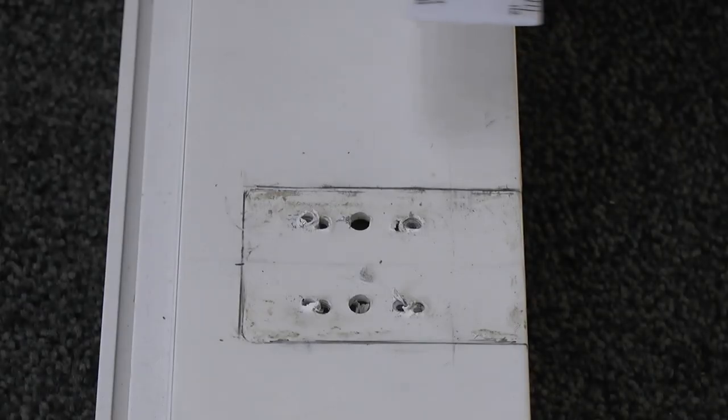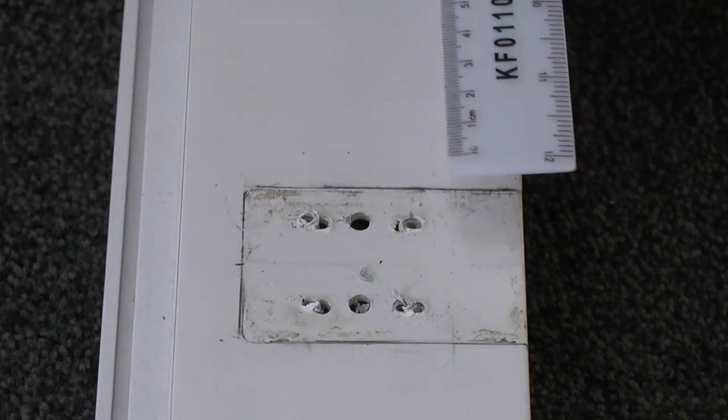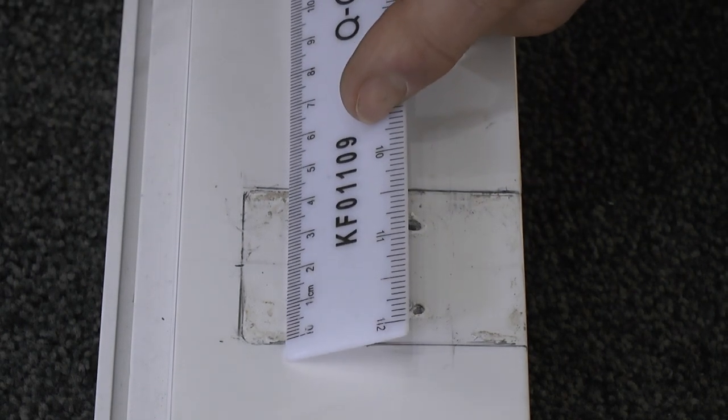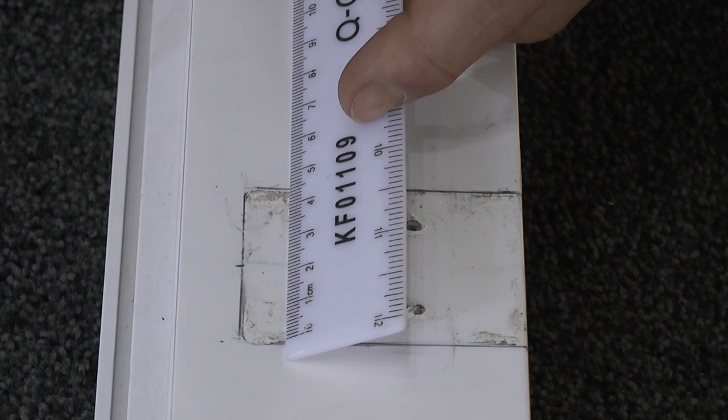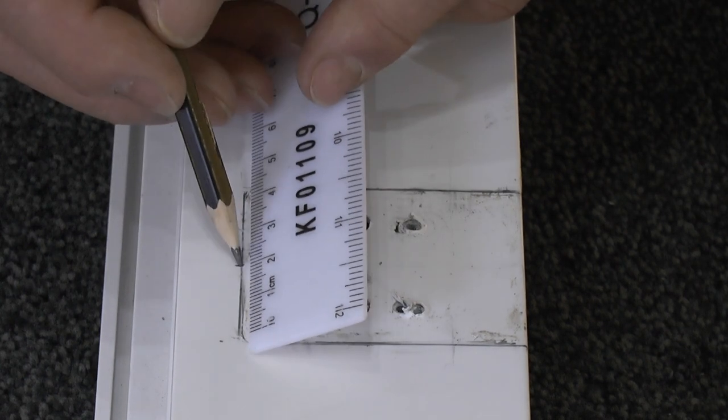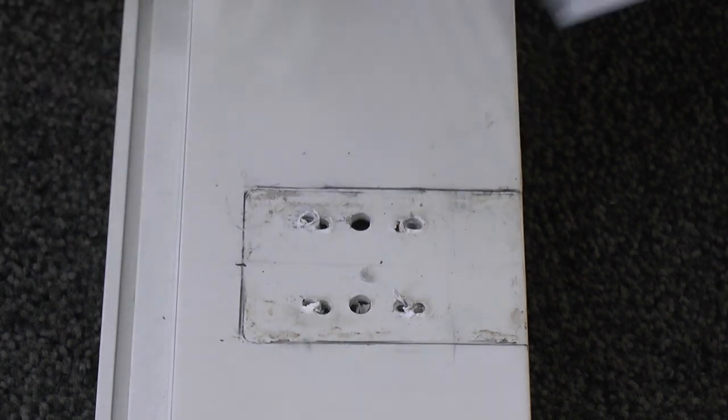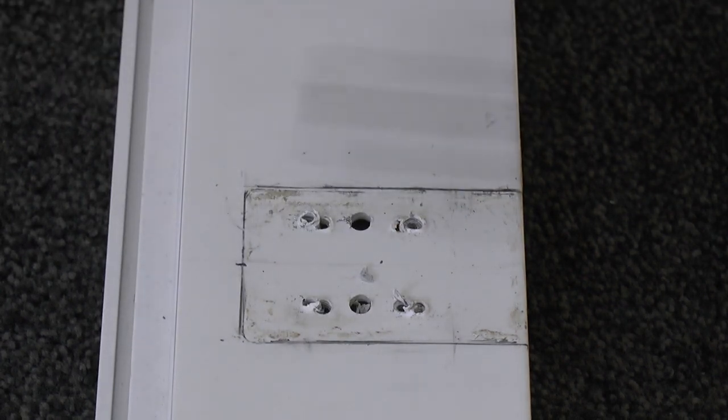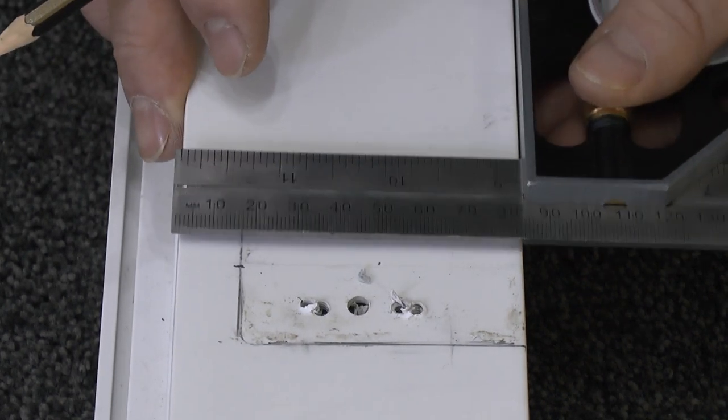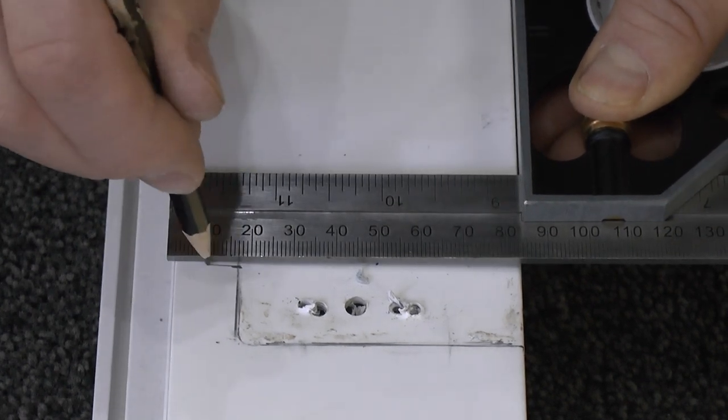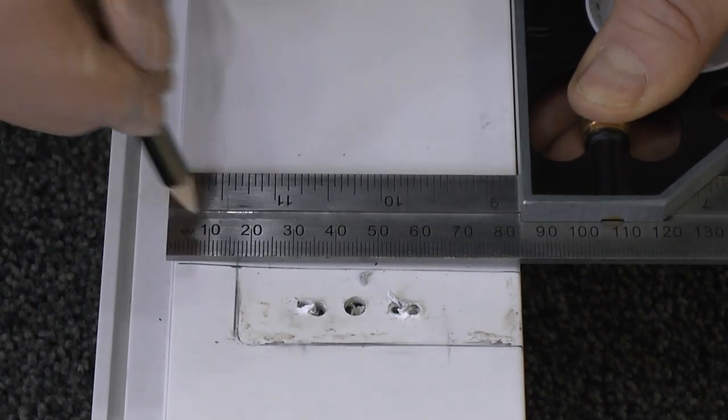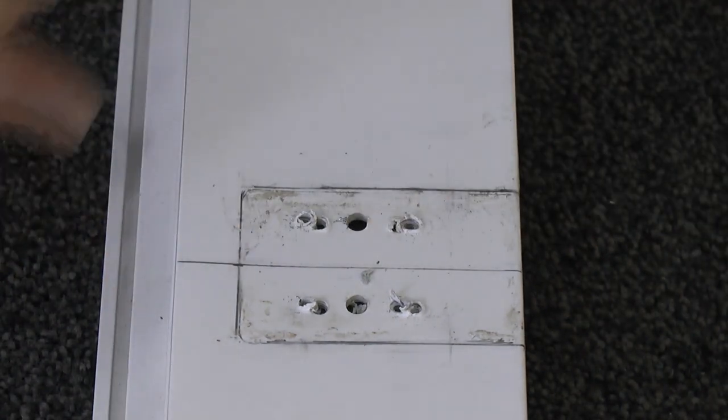We need to determine the center line of this hinge. If we measure the pencil lines, this one's 45 millimeters, so the center point is 22 and a half. That's marked there. Then I'd use a square just run a square right the way across the door, and that gives you the center line of that hinge.